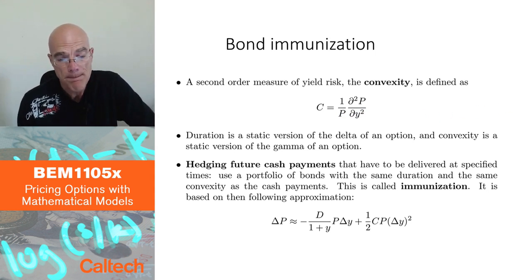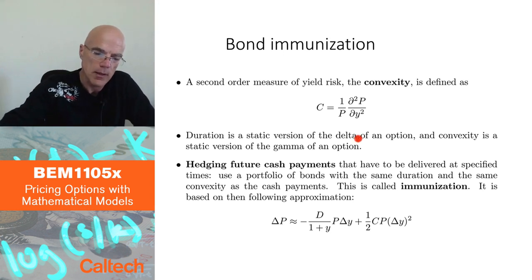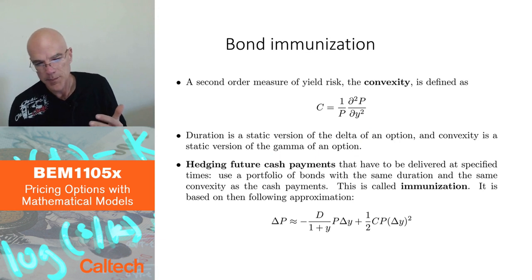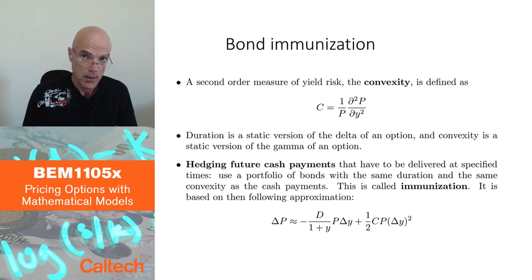We haven't talked much about hedging options. We are going to talk about that next. But we did talk about delta. The duration as a first derivative is kind of a static version of the delta of an option, and convexity would be corresponding to the second derivative of the price with respect to the underlying, which is going to be called gamma of an option. The difference is that with options as we are going to see, we are going to do dynamic hedging. We are going to rebalance all the time. Here, we are thinking about static hedging.